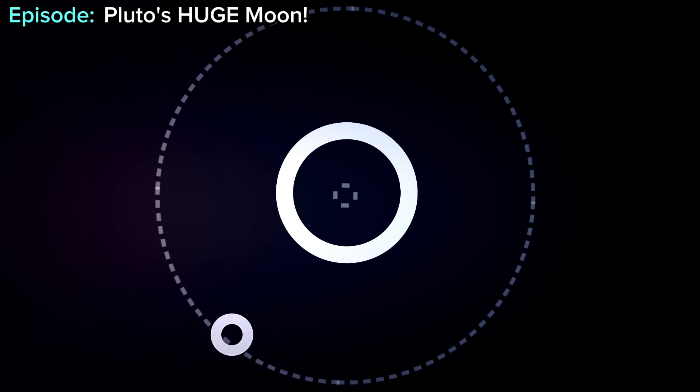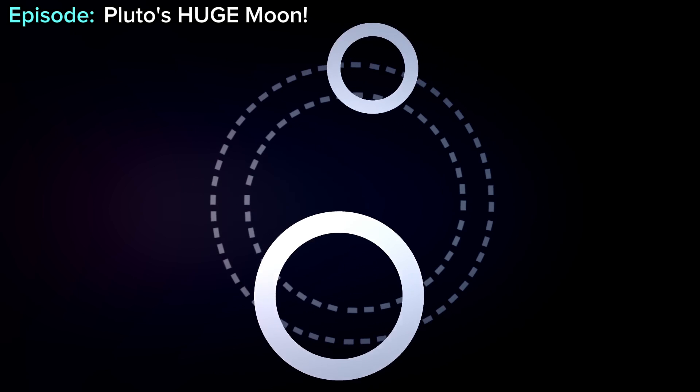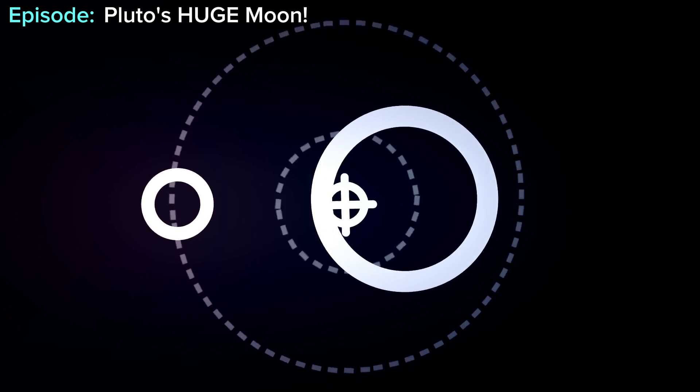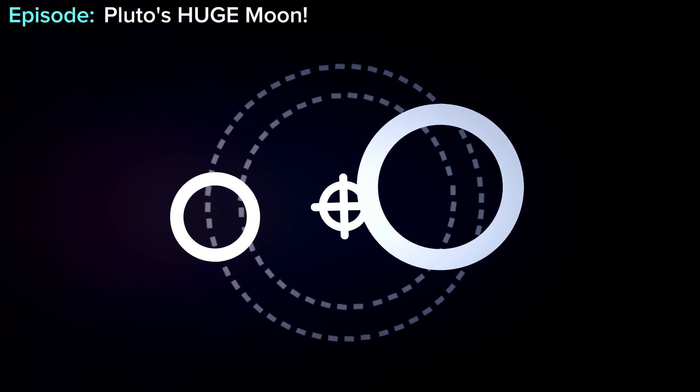The small planet orbits around the big planet, blah, blah, blah. But us, we orbit around each other. So, our center of mass isn't near my center, but instead, it's a bit further away.